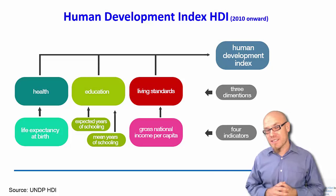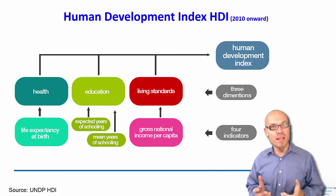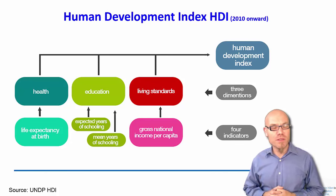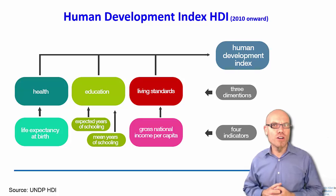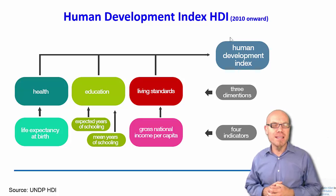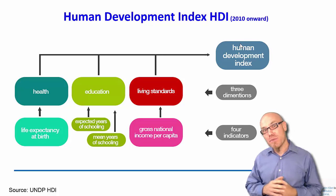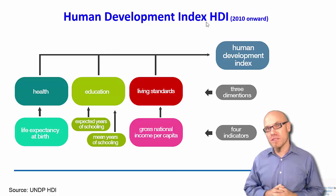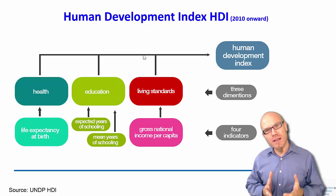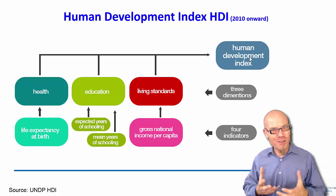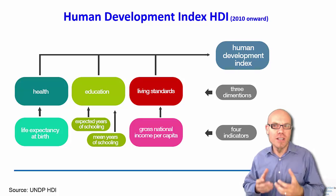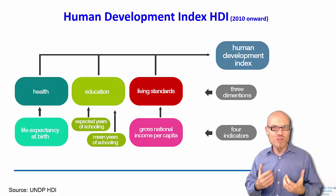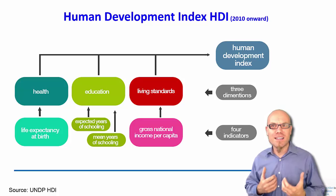Over the years, Professor Sen closely collaborated with the United Nations Development Programme (UNDP), and together they developed what is now known as the Human Development Index, the HDI. The HDI was a big revolution because instead of simply looking at income as a development indicator, it looks at different indicators — basically four indicators across three dimensions.